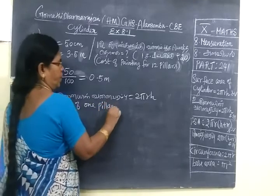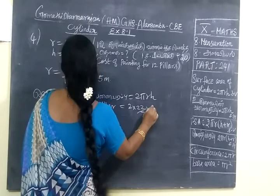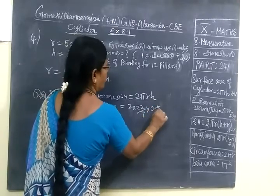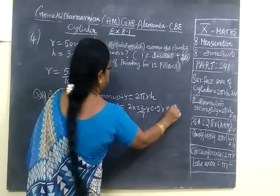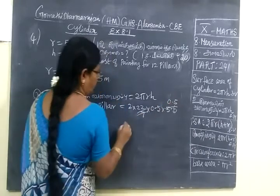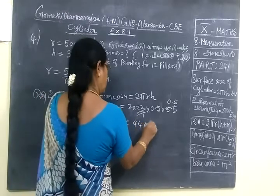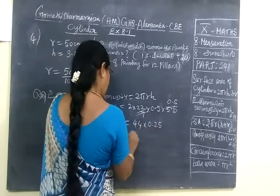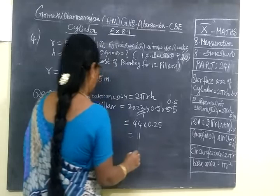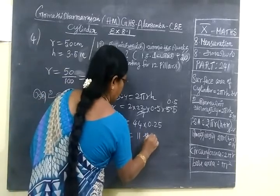Equal to 2πrh. R is 0.5 into H is 3.5. So if you cancel, you get 0.5. If you multiply 44 into 0.5, that will be 11. Now this is square meter.